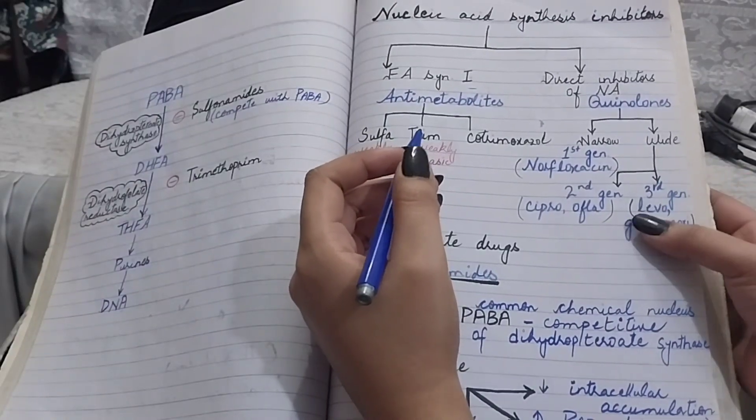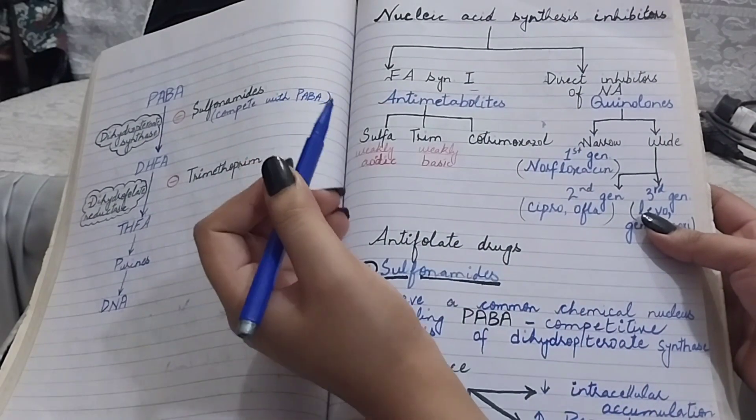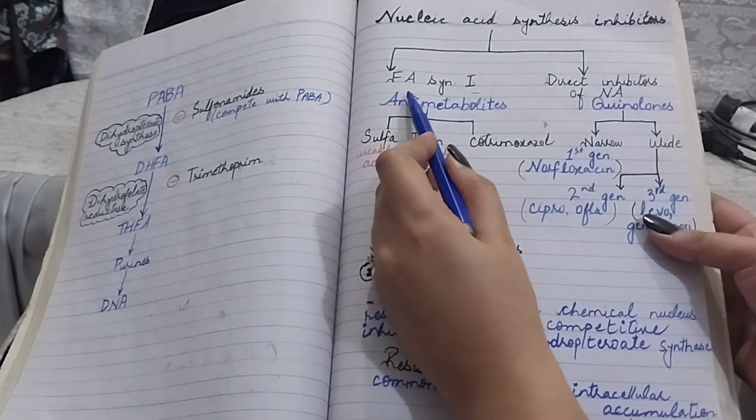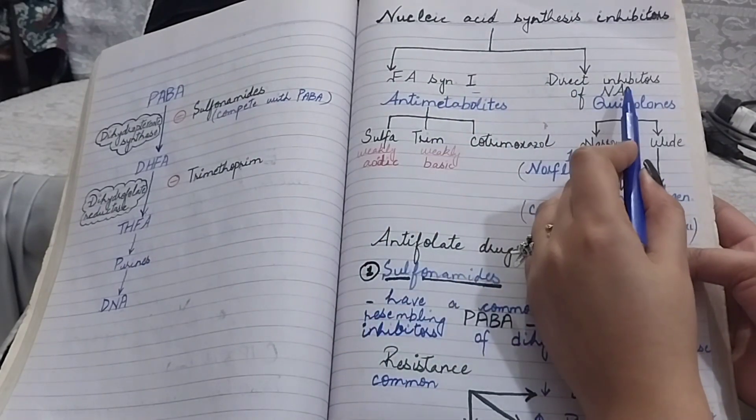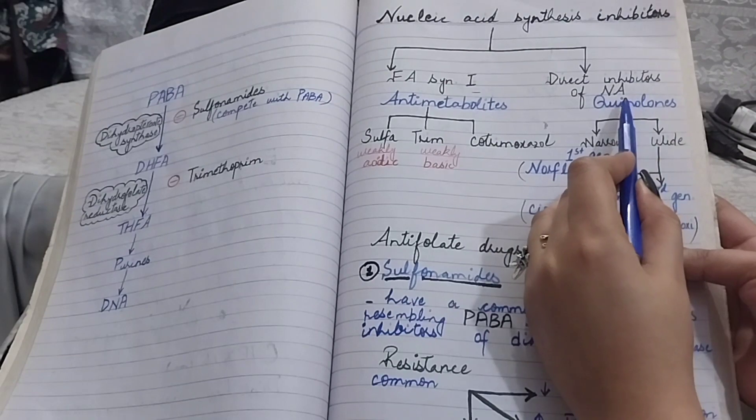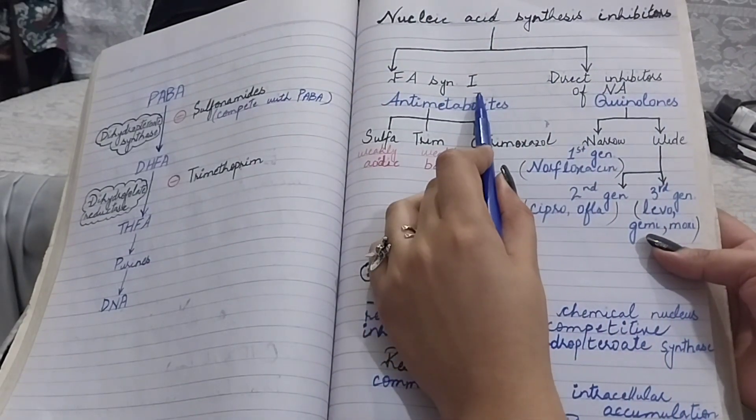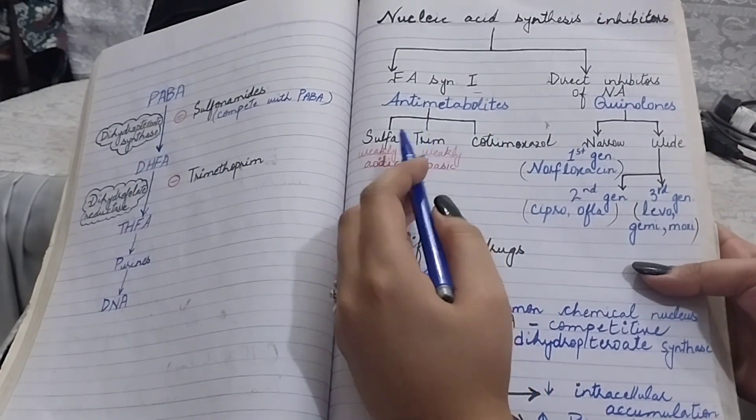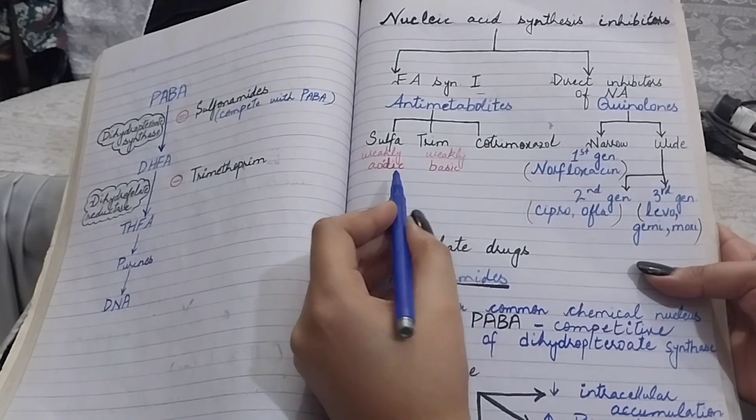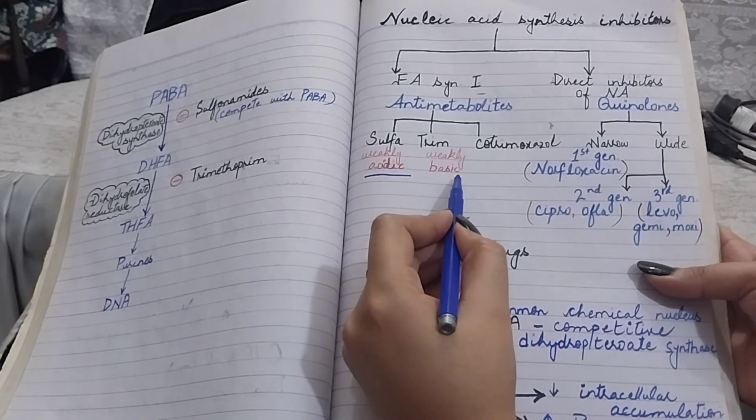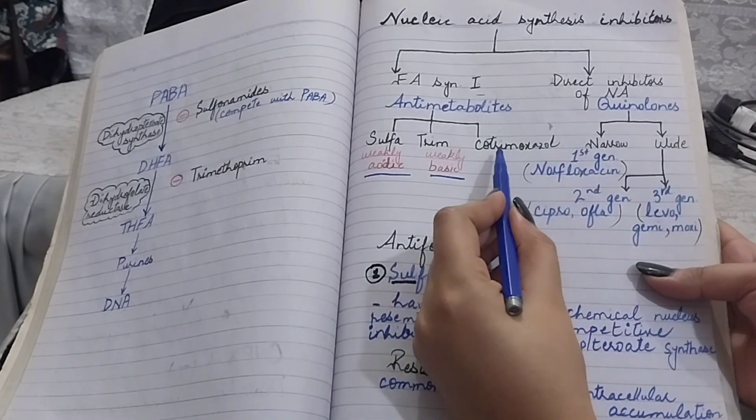Assalamu alaikum. Today's topic is nucleic acid synthesis inhibitors. For convenience, we can divide them into folic acid synthesis inhibitors that are antimetabolites, and direct inhibitors of nucleic acid that are quinolones. Folic acid synthesis inhibitors can be further categorized into three: sulfonamides that are weakly acidic, trimethoprim which are weakly basic drugs, and cotrimoxazole.